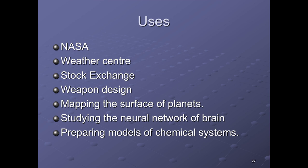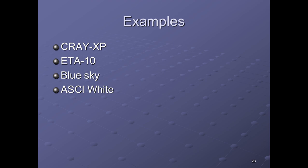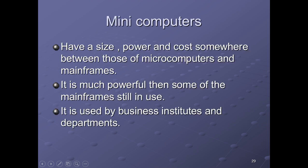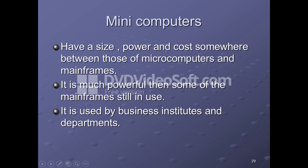Other supercomputer uses include studying the neural network of the brain and preparing models of chemical systems. Examples include Cray XP, ETA 10, Blue Sky, and ASCII White. Mini computers have a size, power, and cost somewhere between microcomputers and mainframes. They are used by business institutions and departments. Examples include DEC PDP 8800 and MV 1500.